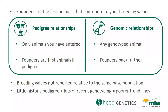We scaled the genomic relationships to be closer to pedigree relationships. We did this scaling because the genomic relationships were pulling the trend of some flocks down. These biased trends were caused by how relationships are represented using genomics compared to pedigree.